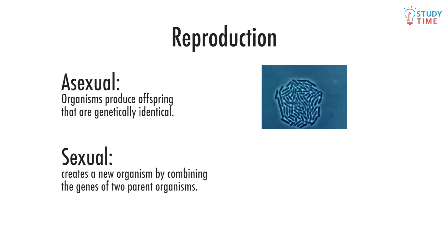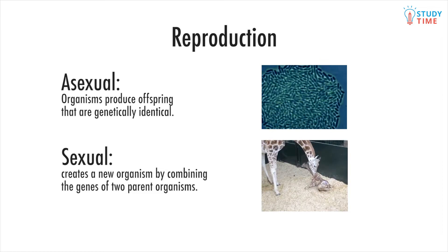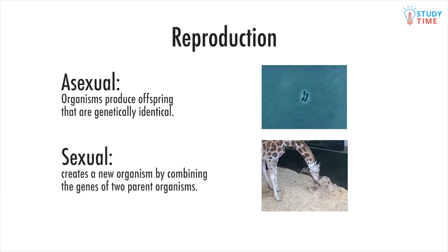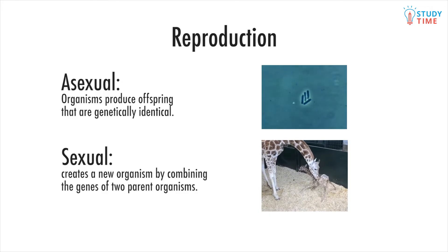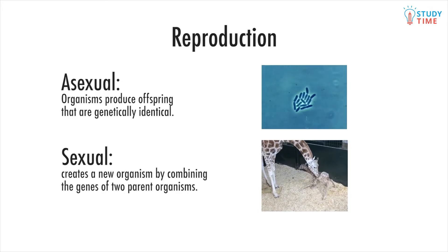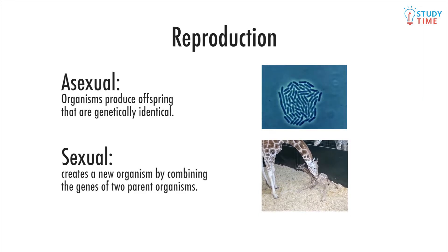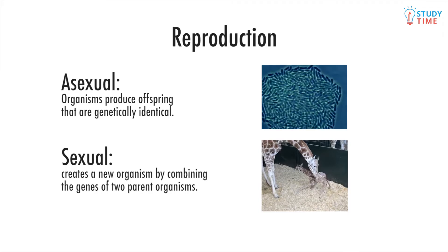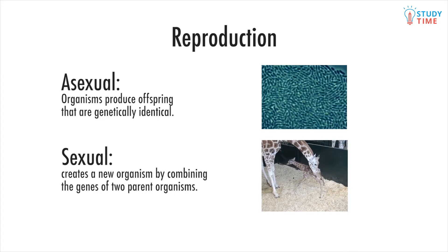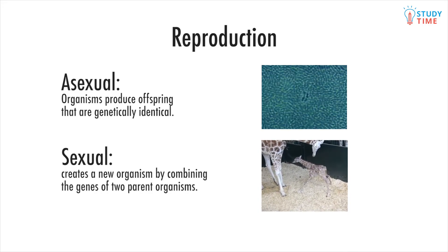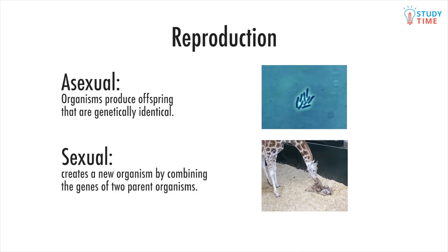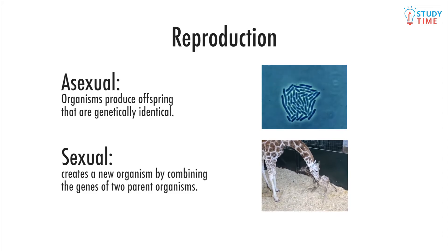Sexual reproduction creates a new organism by combining the genes of two parent organisms. There are disadvantages to sexual reproduction — unlike asexual, it is slow and takes a lot of energy, which isn't good when the environment isn't changing much. It has a big advantage though, and this is the variation of alleles inherited from the parents during meiosis. This variation can be beneficial, and so it can be important for survival in a changing environment.